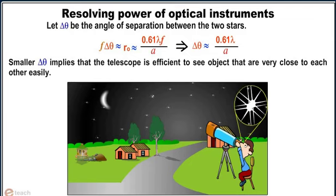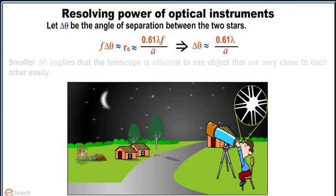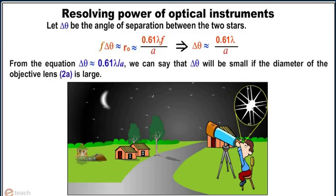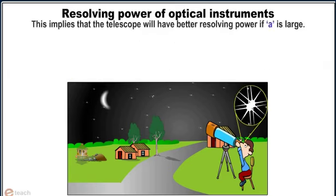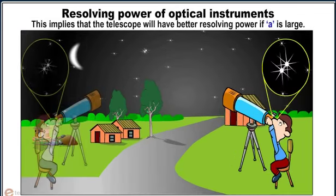Smaller delta theta implies that the telescope is efficient to see objects that are very close to each other easily. From the equation delta theta is approximately equal to 0.61 lambda by a, we can say that delta theta will be small if the diameter of the objective lens 2a is large. This implies that the telescope will have better resolving power if a is large.